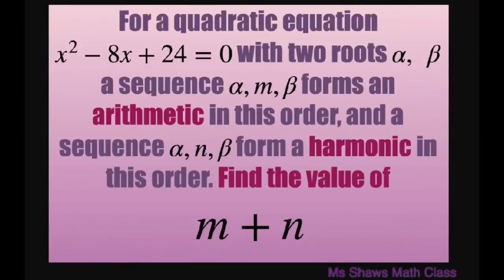Hi everyone. For a quadratic equation x squared minus 8x plus 24 equals zero, we have two roots alpha and beta.